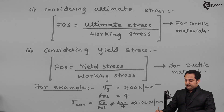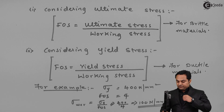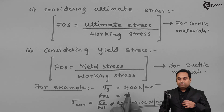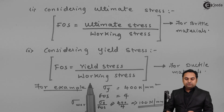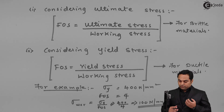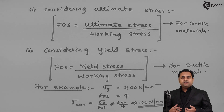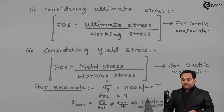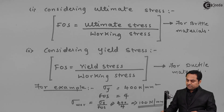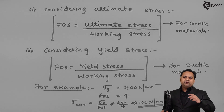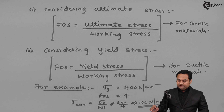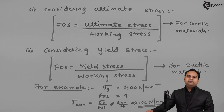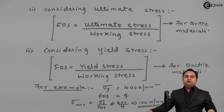That gives a value of 100 Newton per mm². By dividing the yield stress with the factor of safety, we have reduced the stress from 400 to 100 Newton per mm². This 100 Newton per mm² is the working stress used when the material is in service — it will never cross 100, and since it is not reaching 400, the chances of the material breaking are very rare. In this video we have seen what is meant by a factor of safety.